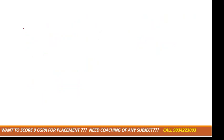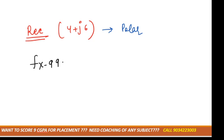So we need to know how we can convert this into polar form. Suppose we are having rectangular form like 4 plus j6 and we need to convert it into polar form. For that, you have to take out your calculator. If you are having calculator FX 991 EX, you need to press shift.